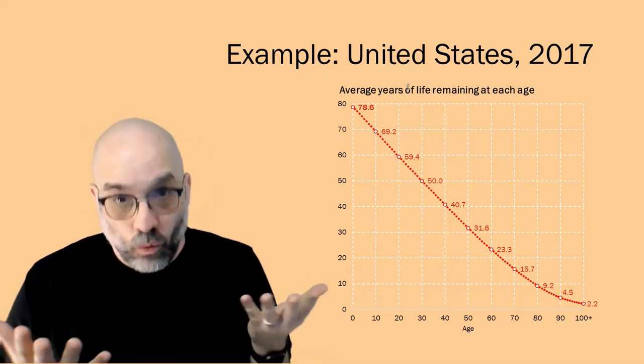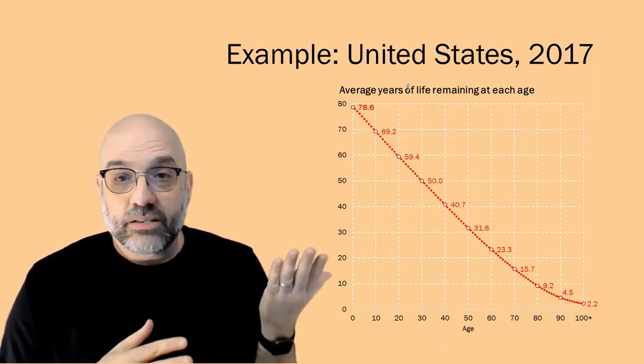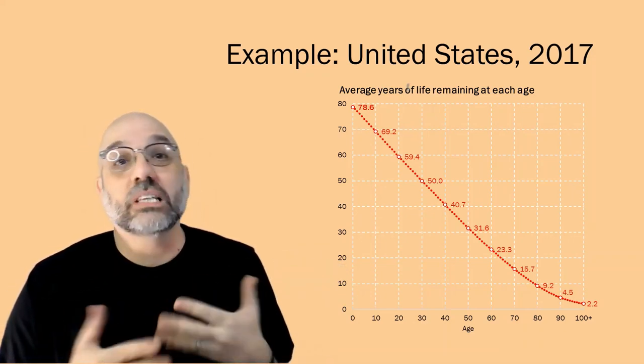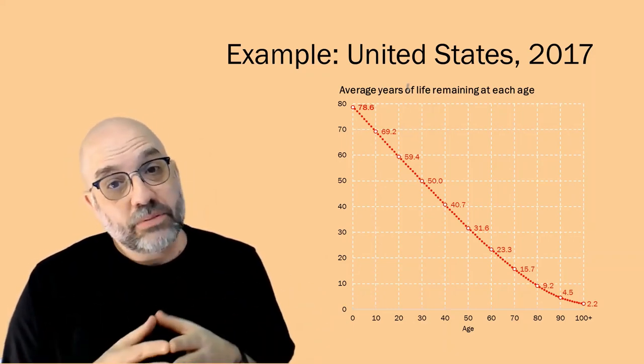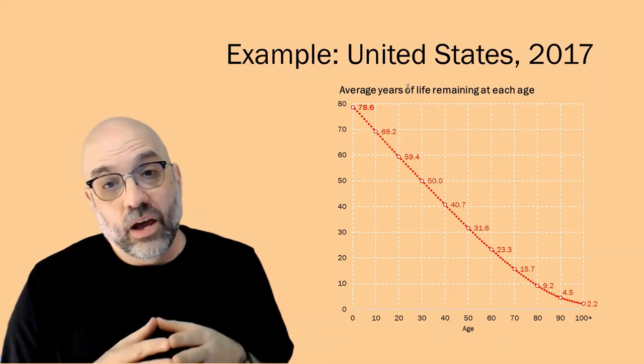For example, people who live to age 20 in our figure have a life expectancy of 59.4 years left. That's the average years left for people who reach age 20, which will get them up to age 79.4 on average.